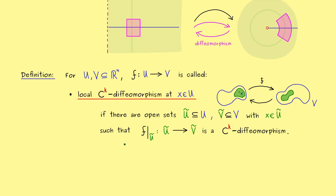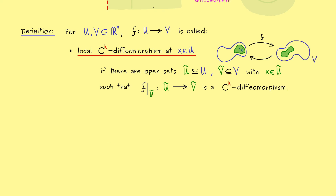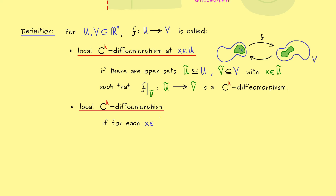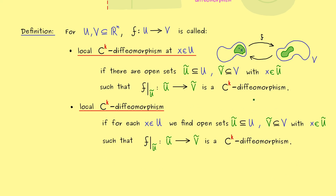This definition tells us the local diffeomorphism works at the point x. Often, however, we want it to work at every point x, which leads to the next definition. We call f simply a local Ck diffeomorphism if the above works for every x in U. In short, it is a local Ck diffeomorphism at x for every x in U. So a local Ck diffeomorphism can mean two things: either locally at a given point, or for every point in the set.